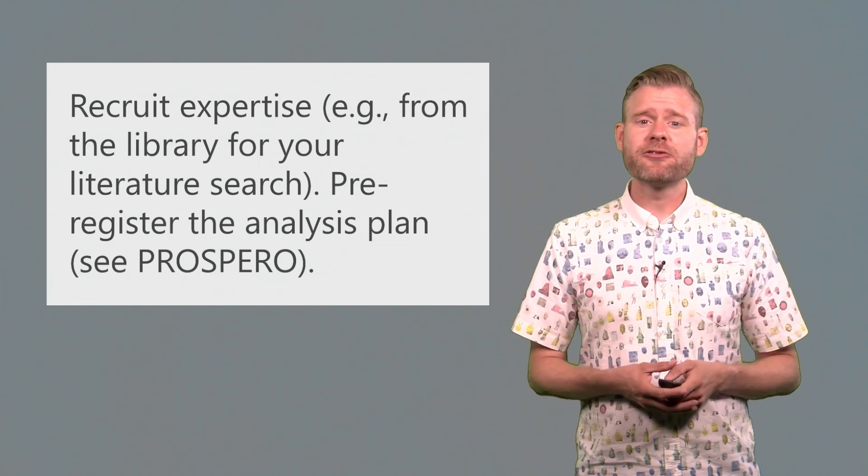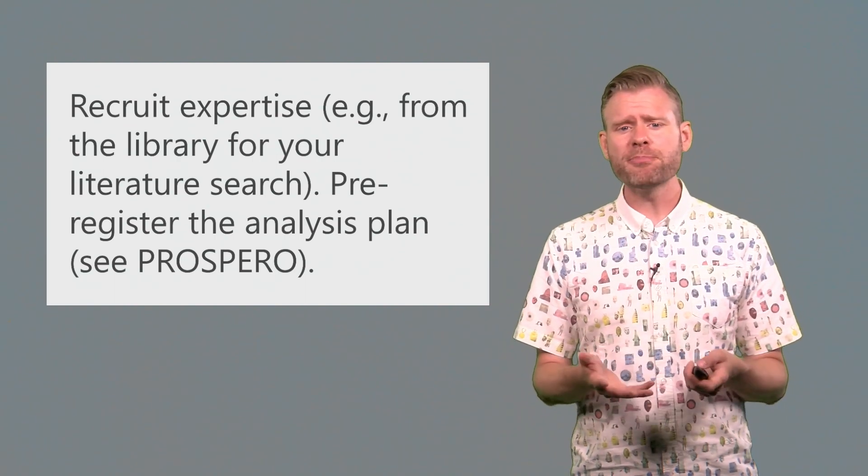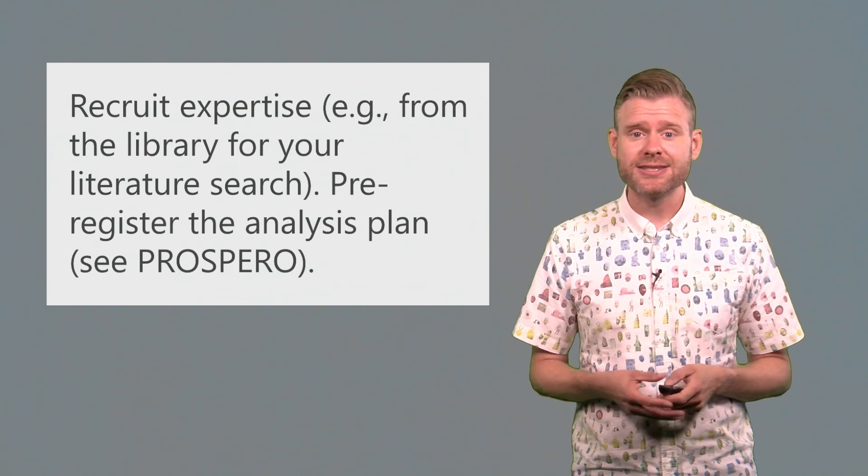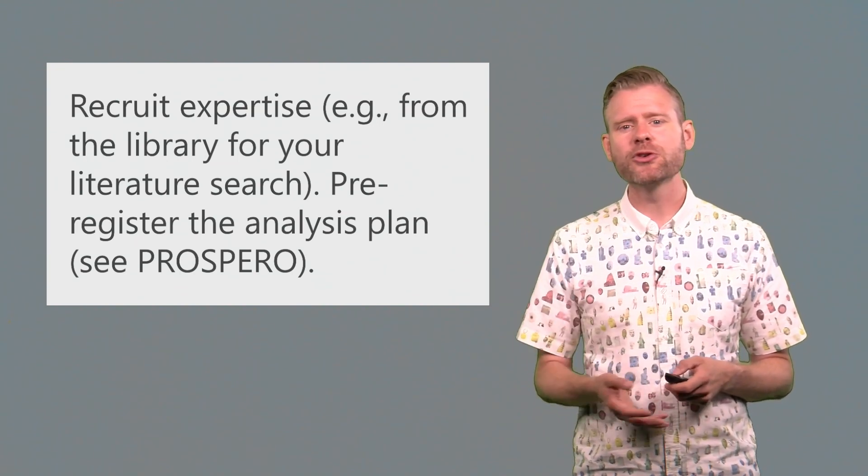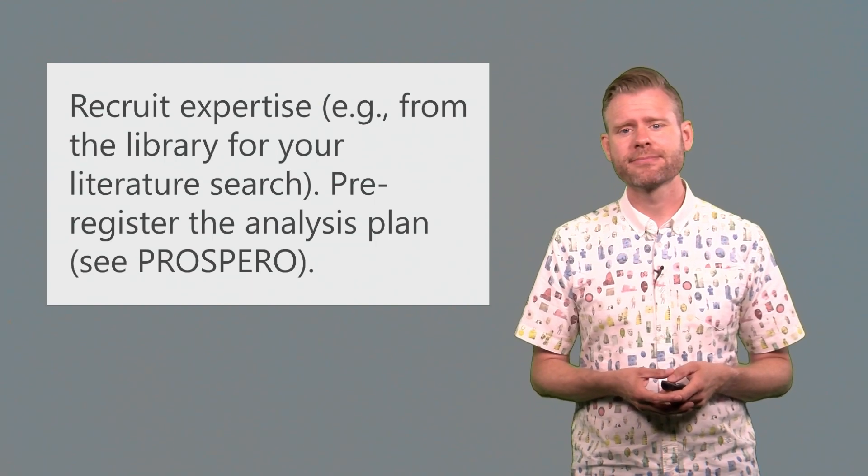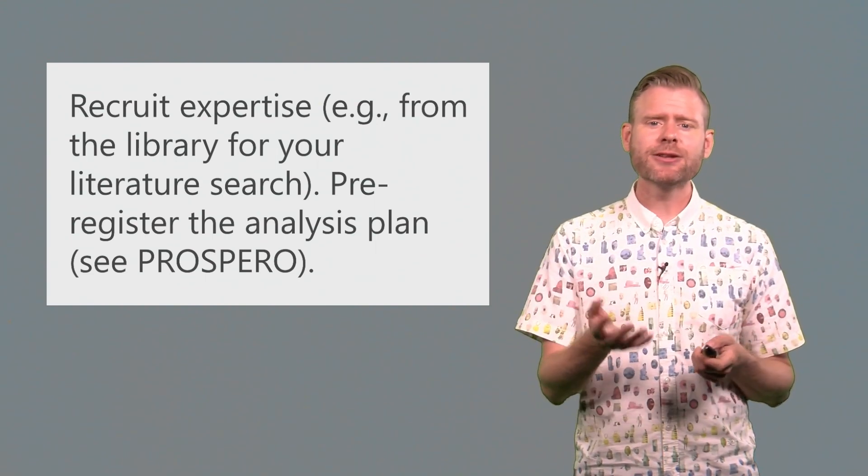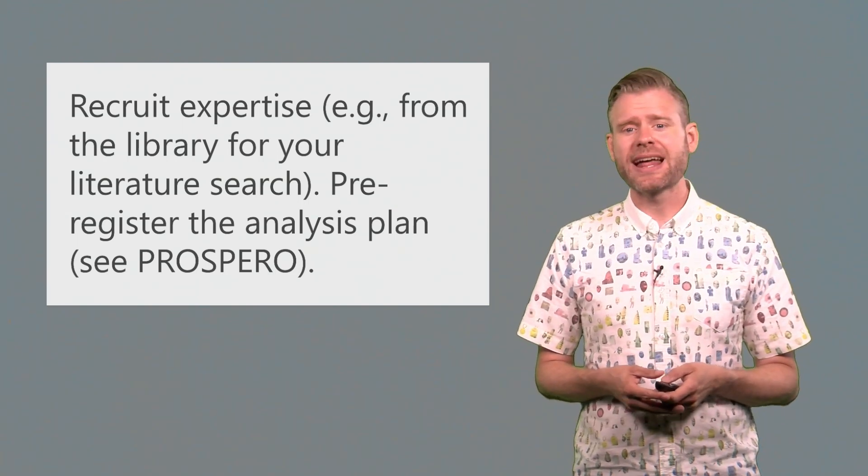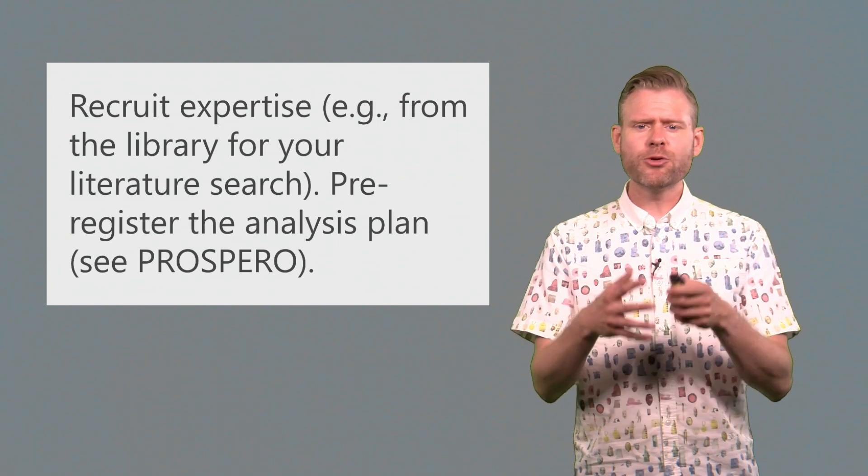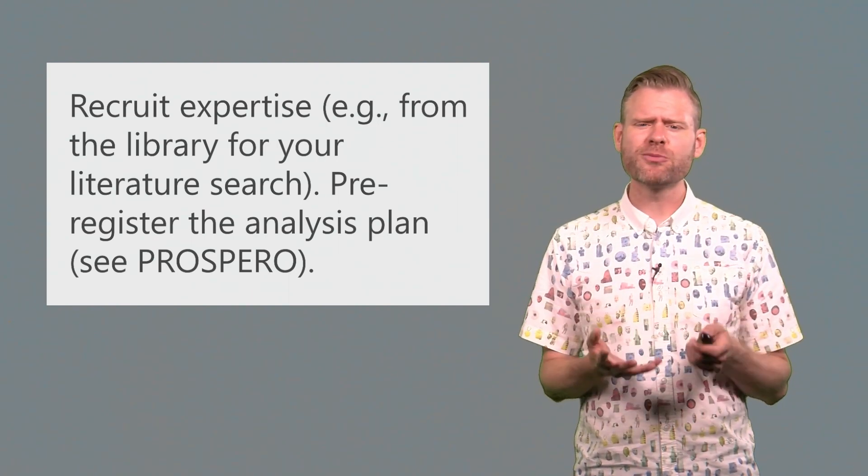One source of information you might not consider is going to your library, for example, to help out with the literature search. There are people here, information specialists, who really know what they're doing and can help you to search the scientific literature for your meta-analysis. You can also pre-register your analysis plan. Take a look at the Prospero database and how this could be done. This makes it possible to be more transparent about what you plan to do as you started on your meta-analysis.